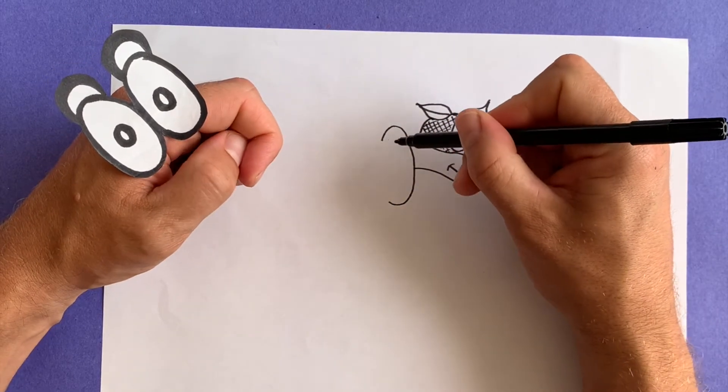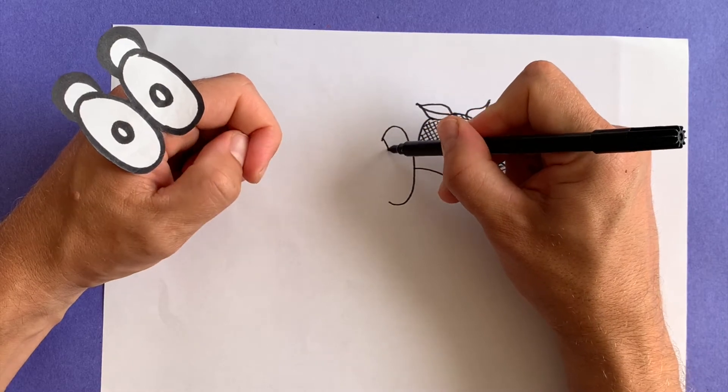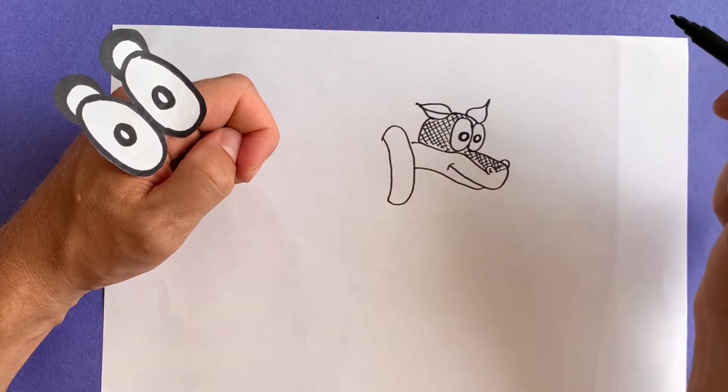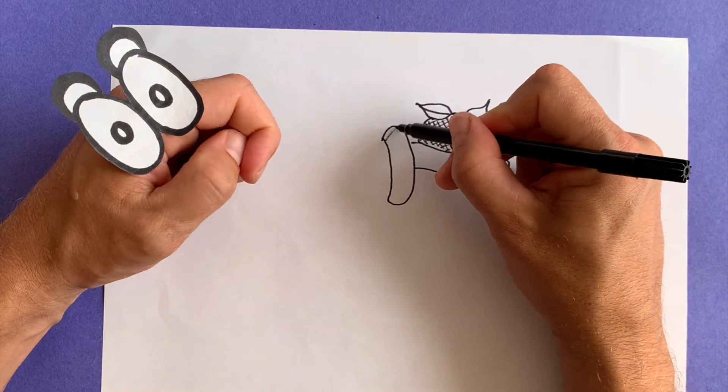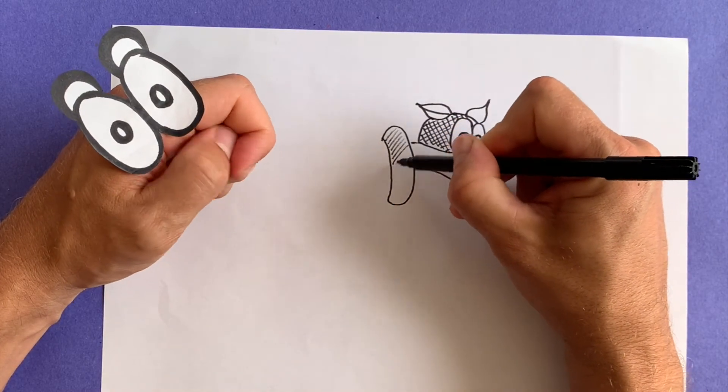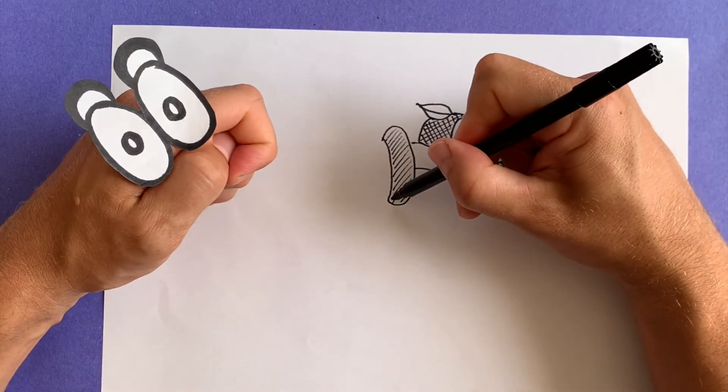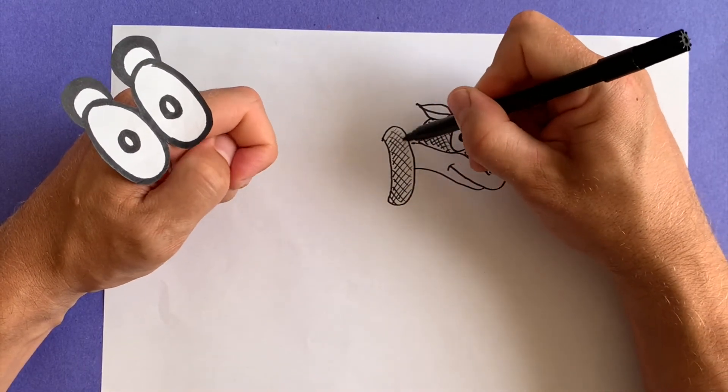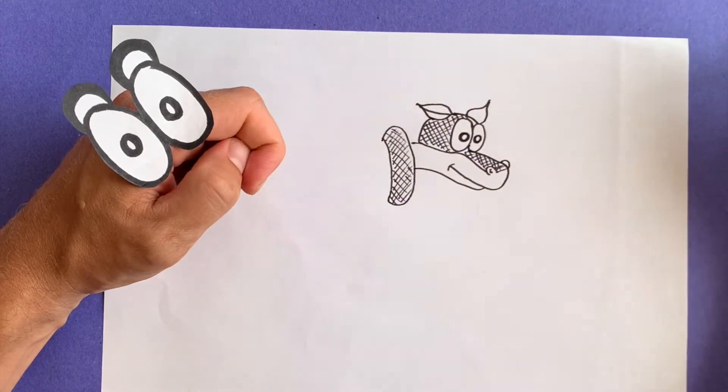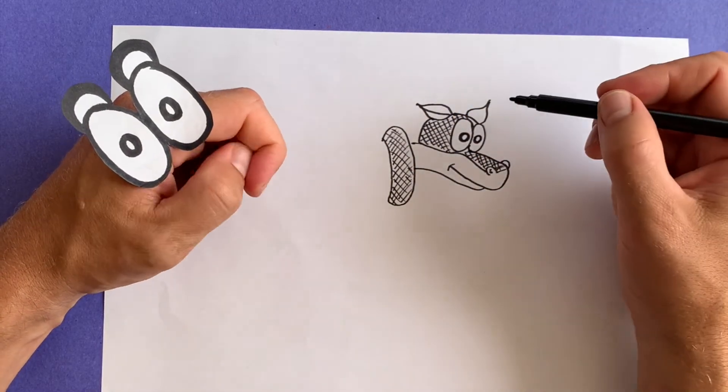And then from that curve, come back around. Ta-da! And let's hatch that, too. Good job. And the other way. Cool. Marty has that big, tough armor.